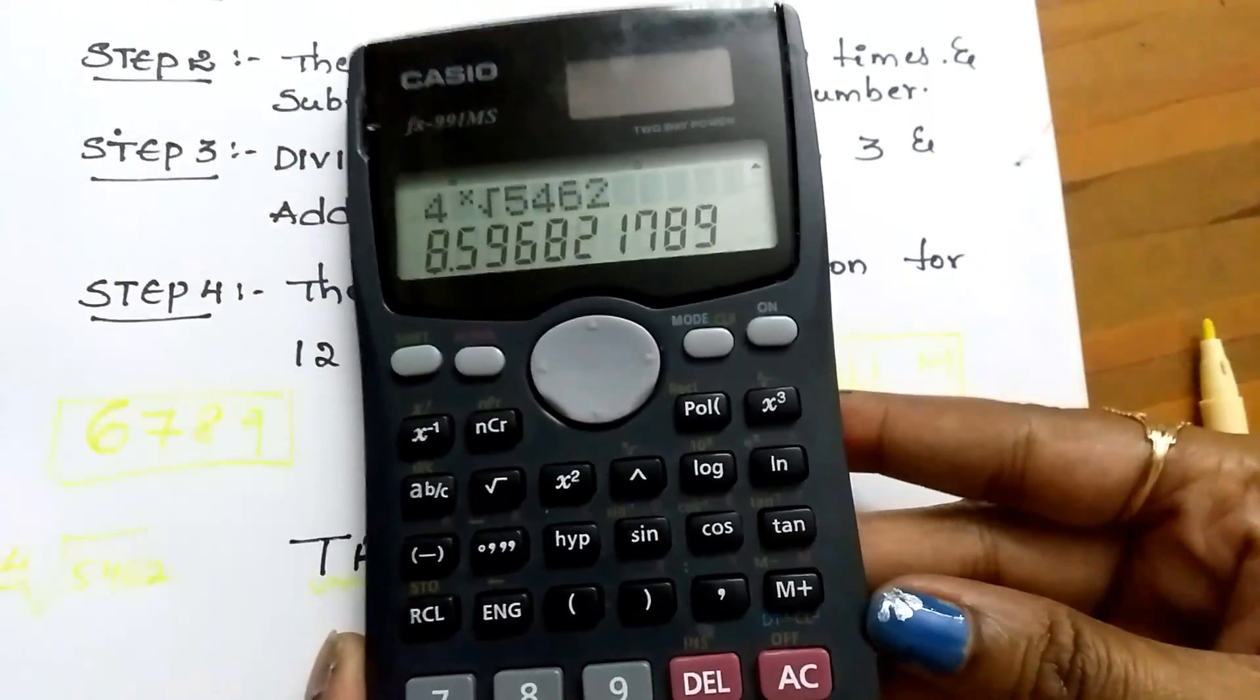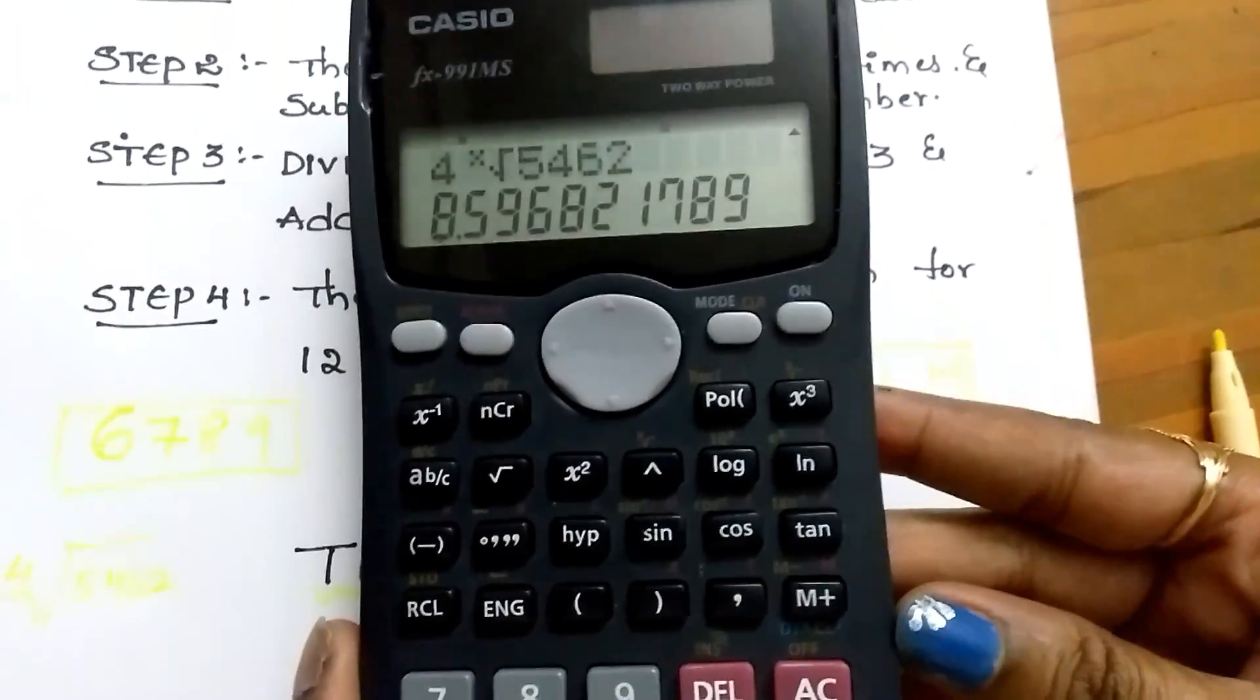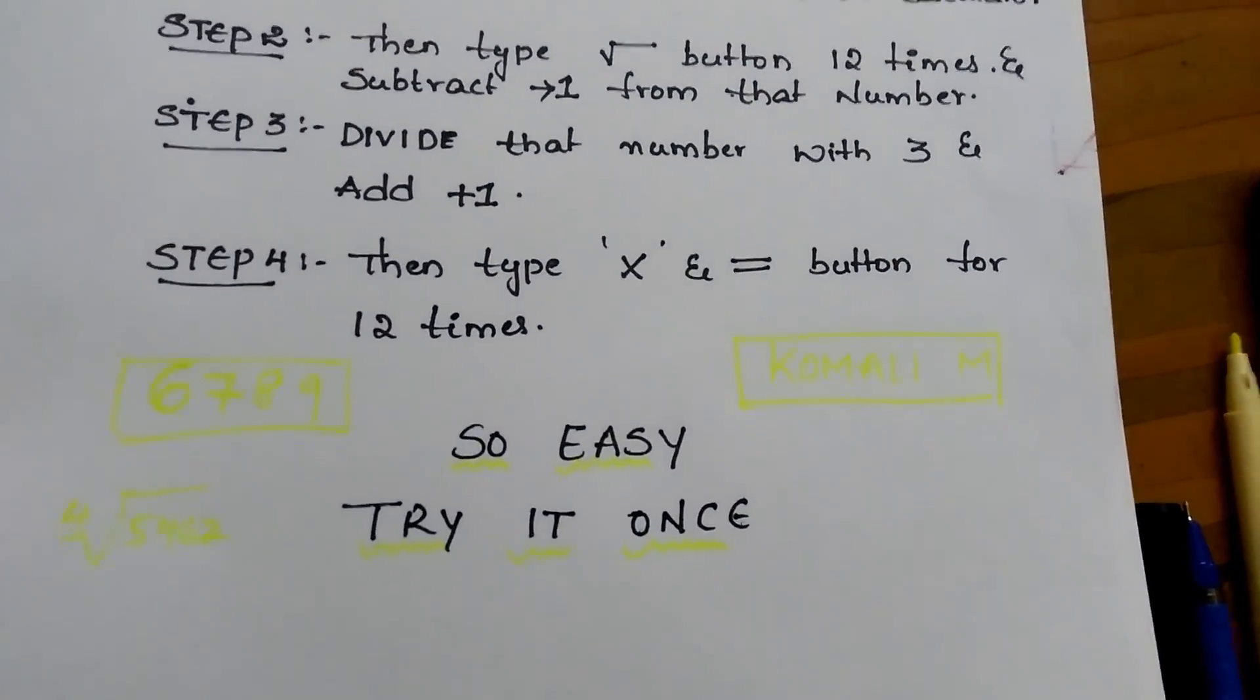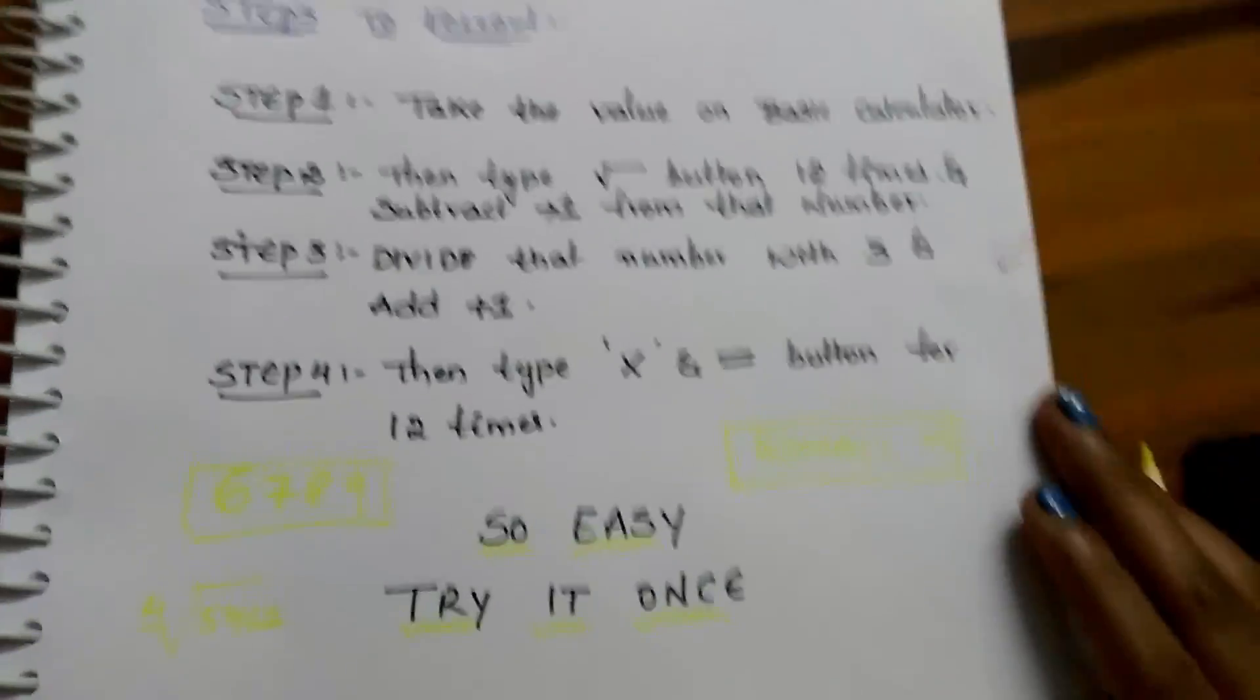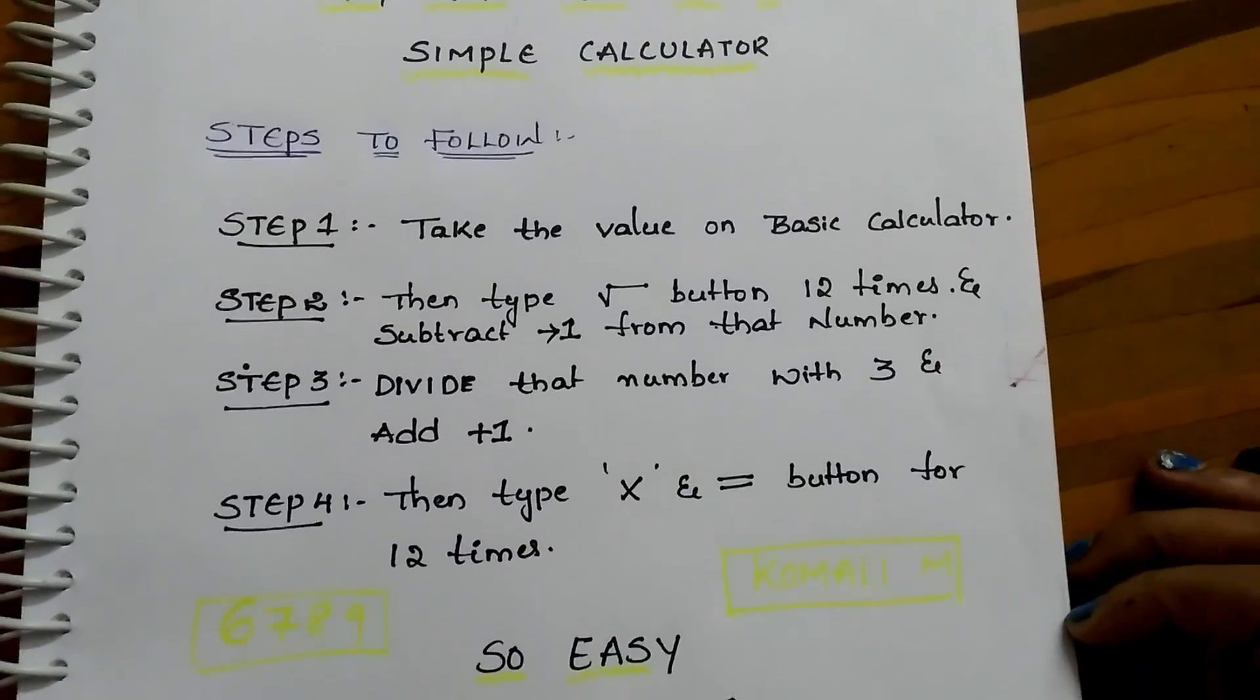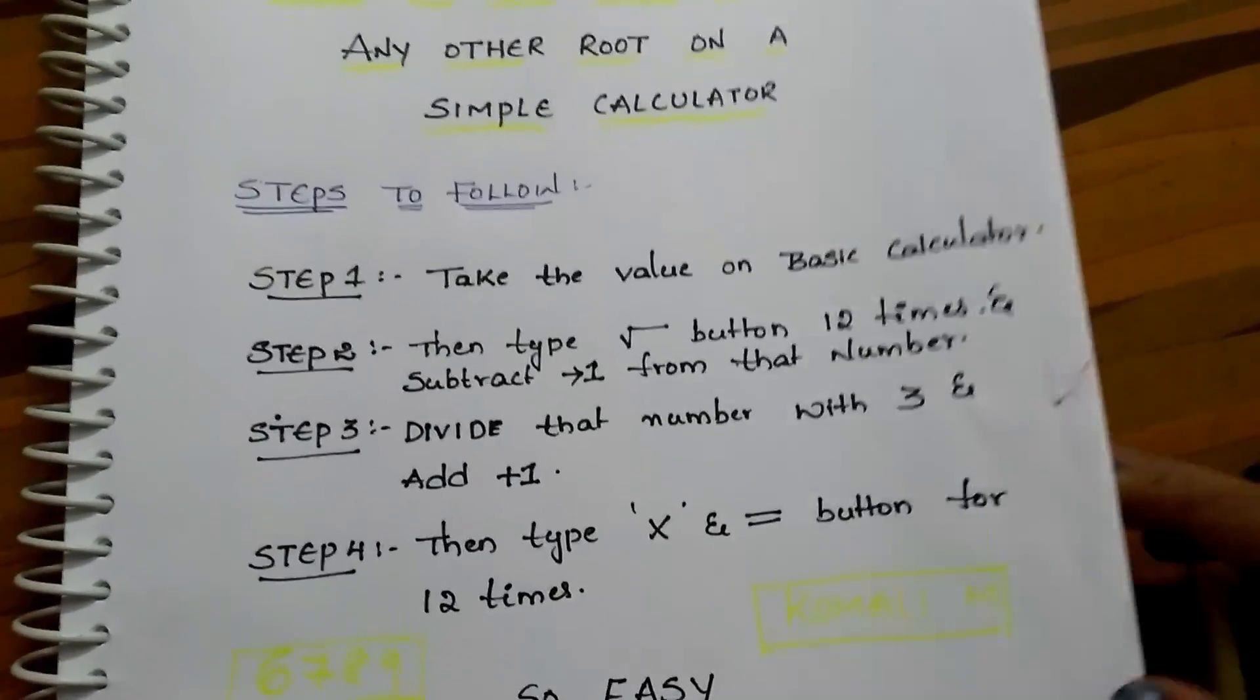See, fourth root of 5462 is 8.6. We got the correct answer. That's it. So easy trick. Once try it students. If you like this video, please click on like button and share my video. Subscribe my channel for more updates.